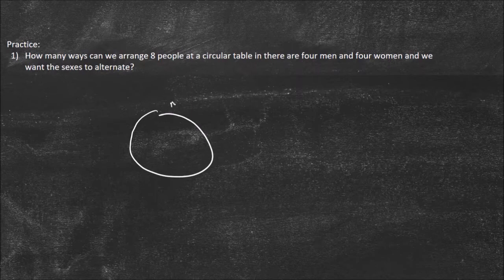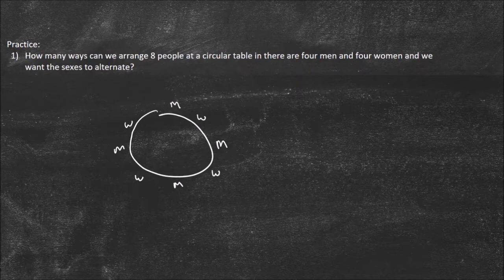So I'm going to draw my picture. It's going to be male, female, men, woman, men, woman, men, woman — alternating around the circular table.